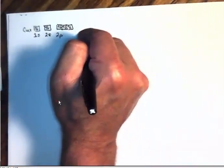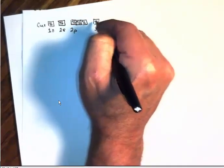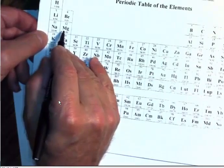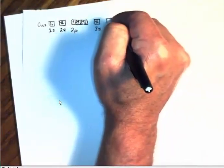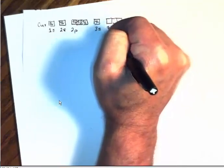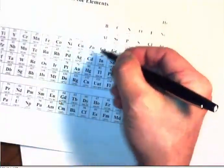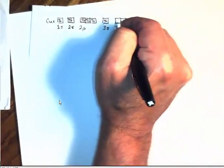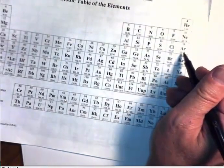We're at neon, so now we go to the third row — level three. The first two columns are the 3s sub level: one orbital, two electrons for sodium and magnesium. Then for aluminum through argon — six atoms, six electrons — we have the 3p sub level. That's three orbitals, one through three, and we fill in six electrons total. Now we have all the electrons through argon.